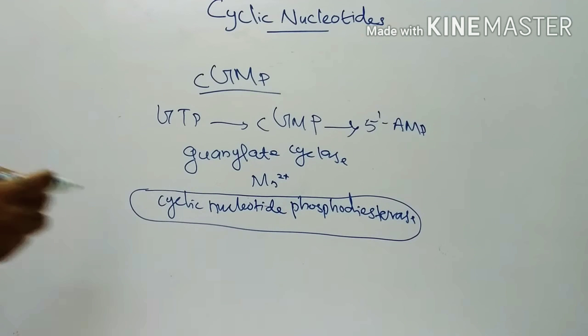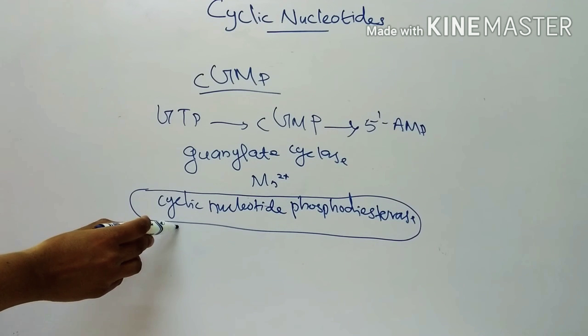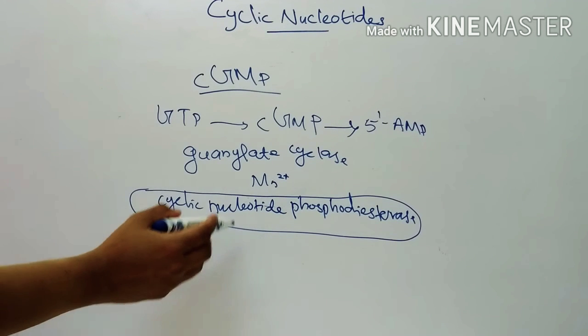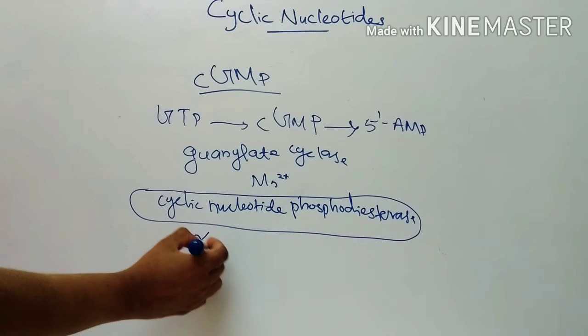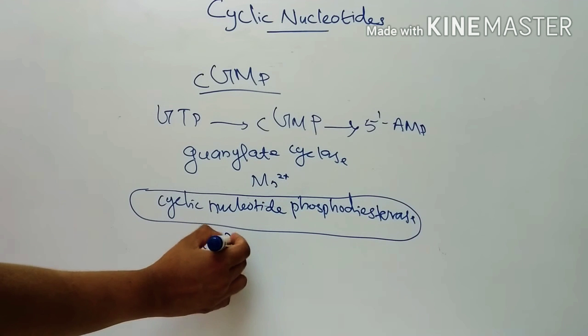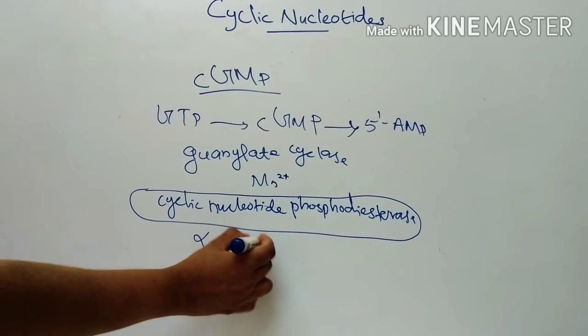The mechanism of cyclic GMP hydrolysis involves cyclic nucleotide phosphodiesterase, which is a trimeric enzyme consisting of three subunits: alpha, beta, and gamma.